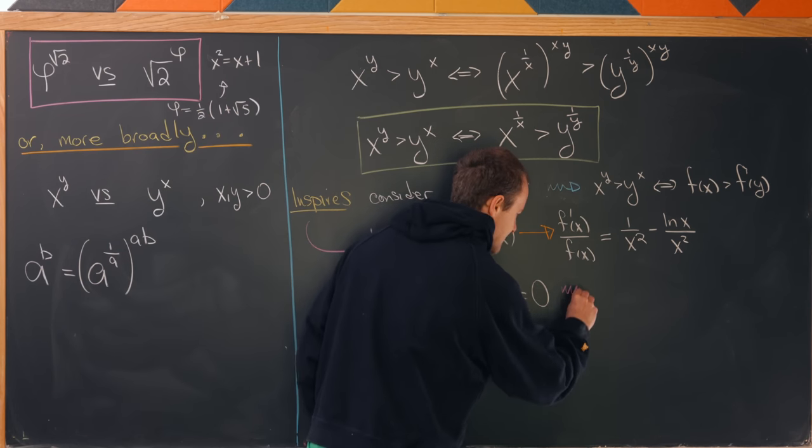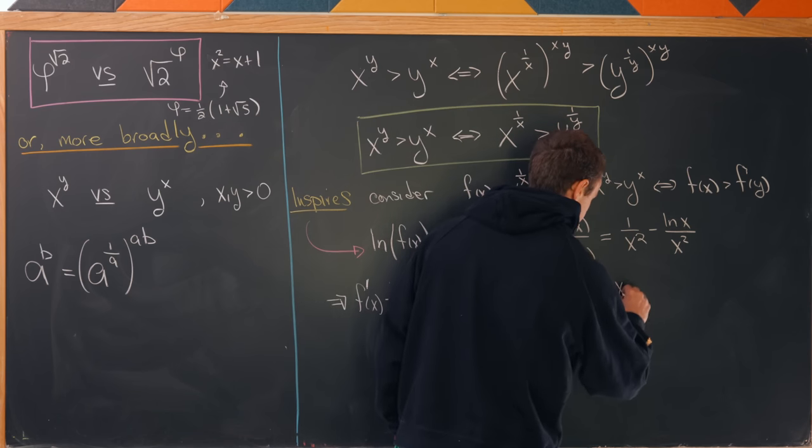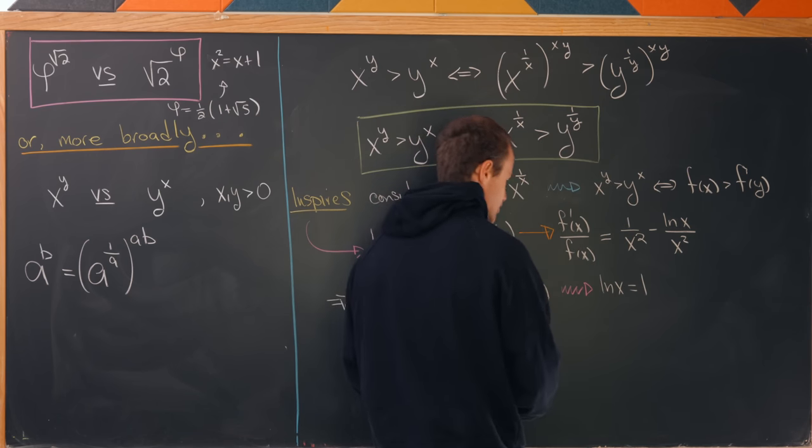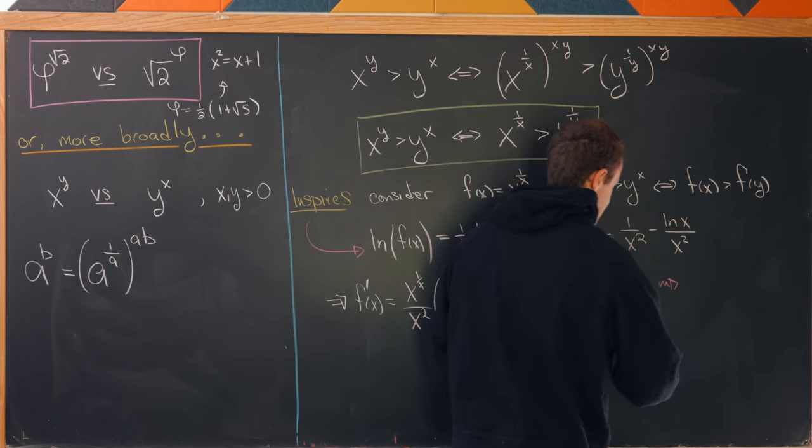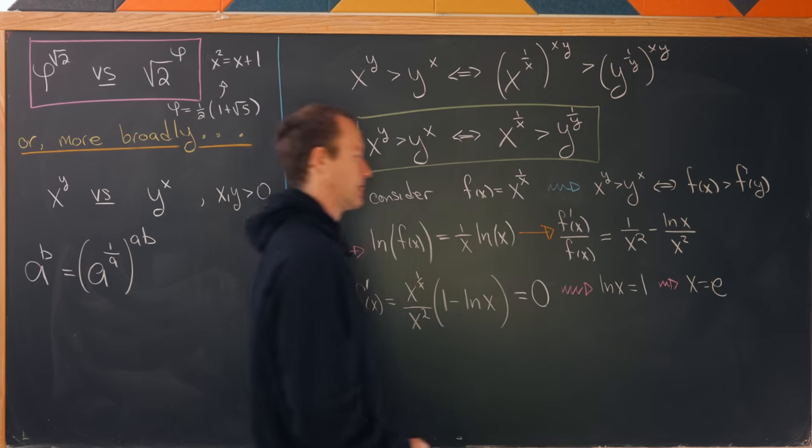So let's see. If this equation is equal to 0, that tells us that the natural log of x is equal to 1, which in turn tells us that x is equal to e.